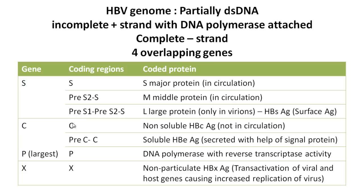When discussing the morphology of hepatitis B virus, we must look at the HBV genome. It is partially double-stranded DNA; the incomplete strand is the plus strand with DNA polymerase attached, and the complete strand is the minus or negative strand. Both strands harbor four overlapping genes: the S gene, C gene, P gene, and X gene, each with different coding regions.